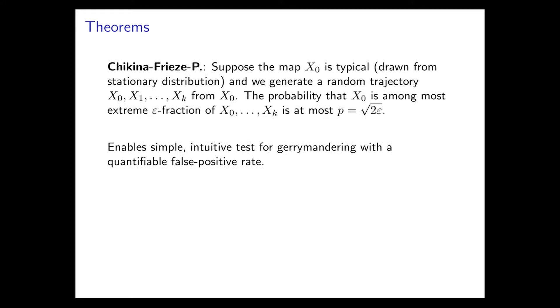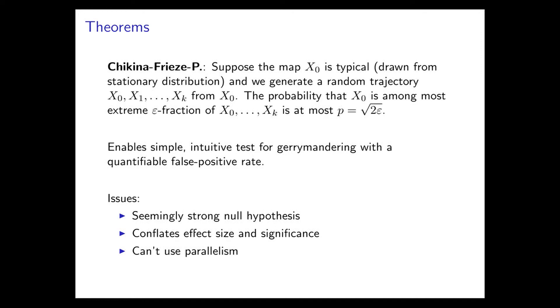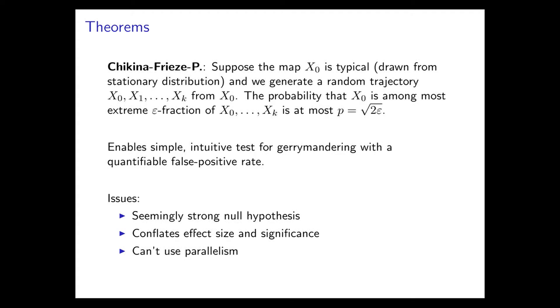You now have a simple intuitive test for gerrymandering: conduct the sequence of random changes to the boundary lines, see if the partisanship consistently changes, and you have a p-value for the test. But there are issues with this. First, it has a strong null hypothesis — it assumes the map is random, and obviously maps aren't random. What we want to say is not just that the map is non-random but that it was really carefully drawn. Another issue is that the output is just significance — you can get a very small p-value when your epsilon is small, but you don't quantify the effect size separately. The third issue is there's no good way to use parallelism with this test. I can't conduct the test a second time and conclude anything extra, because there are two sources of randomness in this theorem: the randomness in the assumption that x-naught is typical, and the randomness in the sequence.